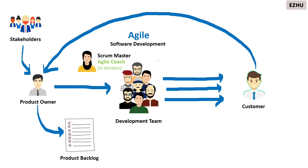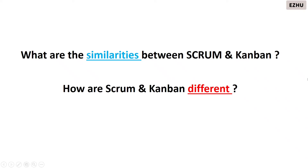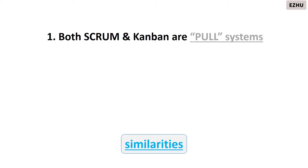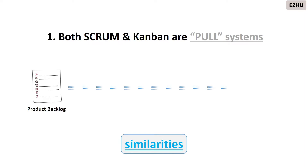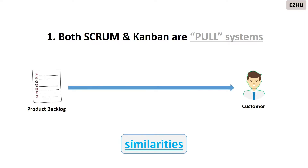The scrum master is referred to as agile coach in kanban. Both scrum and kanban are pull systems, which implies that work from the product backlog gets delivered to the customer in the shortest period of time. Though scrum and kanban are both pull systems, the implementation methods are completely different, as we will see later in this video.